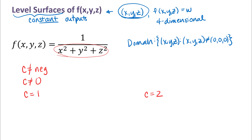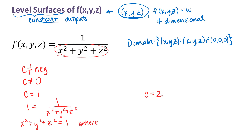I'm going to put one for the output of my function and think about what the graph of that is. Doing a little algebra — multiplying both sides by x² + y² + z² — what I get is the sphere of radius one centered at the origin. That represents all of the points in R³ where the output of that function is one.